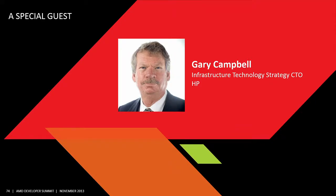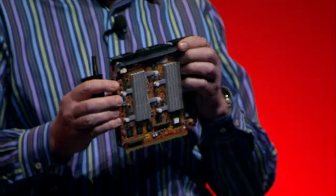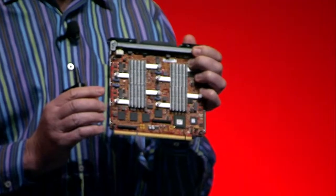I'd like to introduce a special guest, Gary Campbell — one of the pioneers of dense servers and cloud computing and the Infrastructure Technology Strategy CTO from HP. He'll tell us about his vision for the future of the cloud. For the last couple of years, AMD and HP have been innovating together on Moonshot — HP's very dense cloud platform — which is about a tenth of the cost, power, cooling, and size of traditional rack-mounted servers. Today we're announcing an AMD HP Moonshot cartridge.